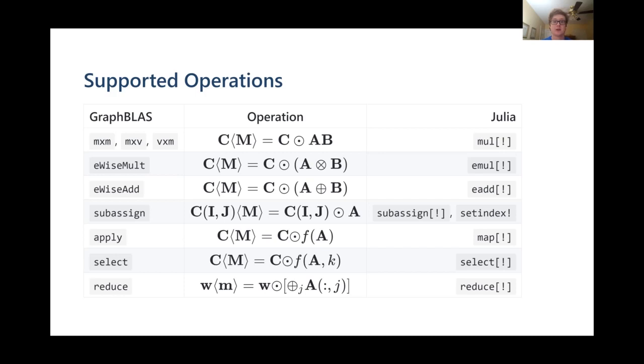The mask, noted by bold M in the math notation, determines what results of the calculation are written into the result matrix C. Masks allow us to effectively ignore large swaths of the iteration space and can massively increase performance whenever you need to operate on subsections of a matrix.